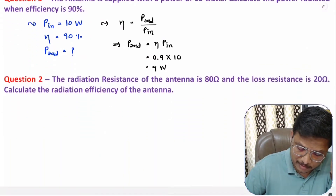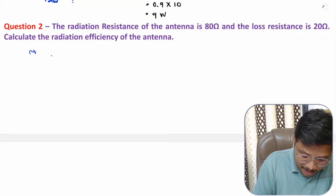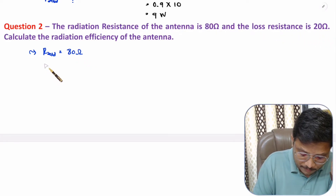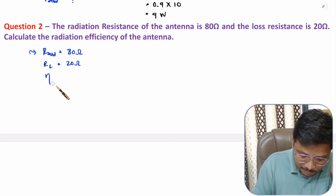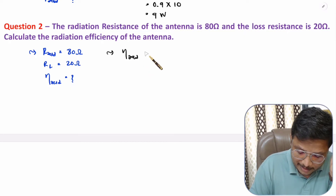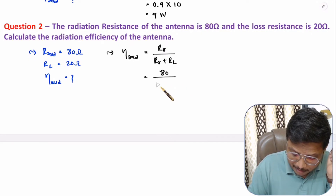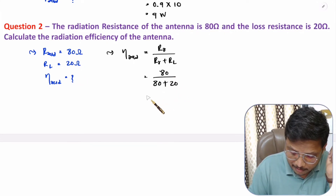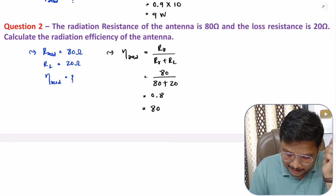In the second problem, the radiation resistance of the antenna is 80 Ω and loss resistance is 20 Ω. We need to find the radiation efficiency. Using the equation: radiation efficiency = R_R / (R_R + R_L) = 80 / (80 + 20) = 80/100 = 0.8. In terms of percentage, that is 80%. So that is how we can identify antenna radiation efficiency.